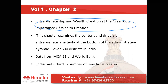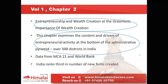This chapter examines the contents and drivers of entrepreneurial activity at the bottom of the administrative pyramid. There are around 650 districts in India, and this Economic Survey has analyzed data from MCA 21, which is a database of the Ministry of Corporate Affairs where all newly registered companies register themselves. Data has also been taken from the World Bank and analyzed over three years, looking at the pattern of new startup businesses in India, the challenges, and the learning from that analysis.